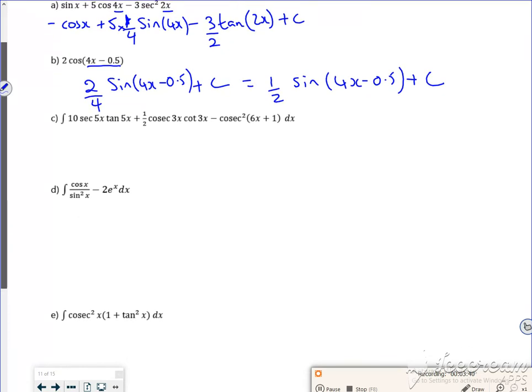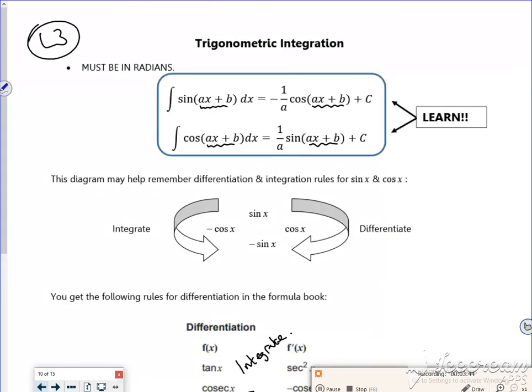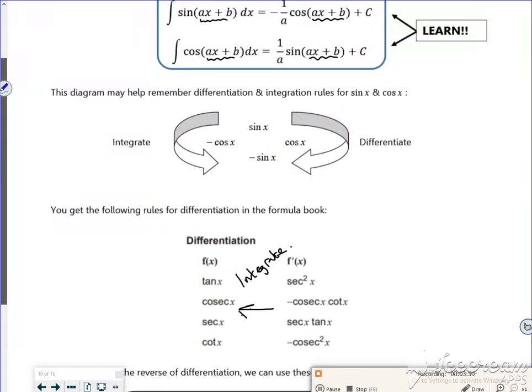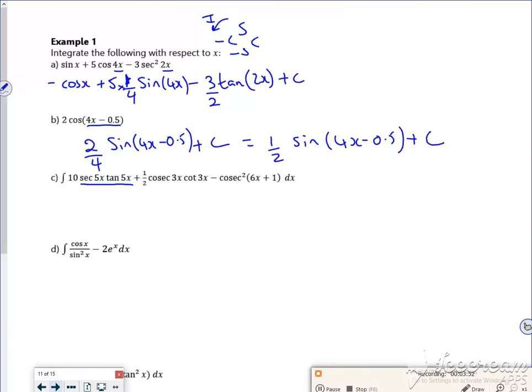Look at this one. Oh my word. Right, so secant tan. So secant tan goes to secant. I've got a half. So secant tan, I have 10 of them already but I differentiate that second bit and put it over it. Yeah so I've got 10 over 5.